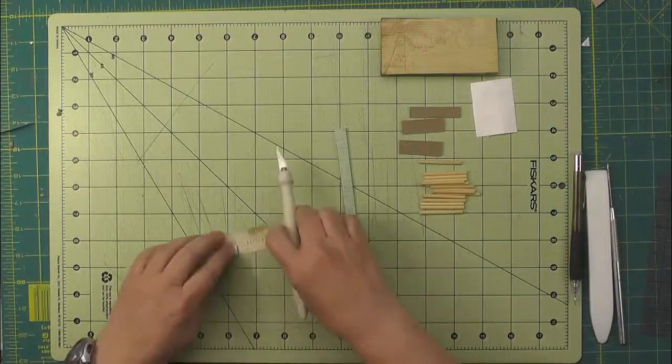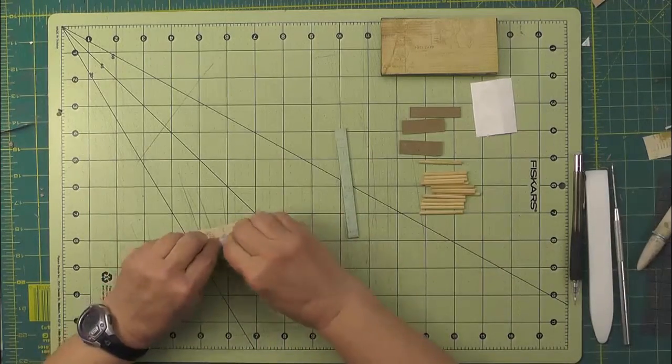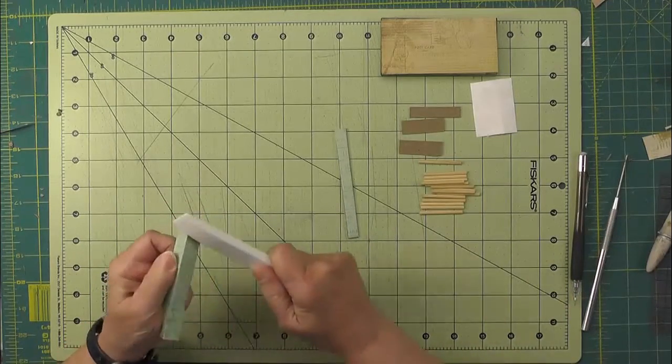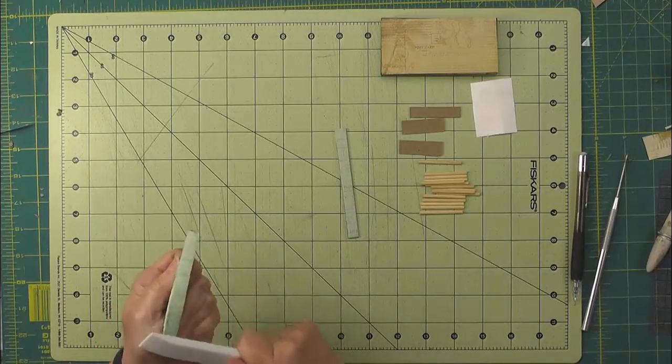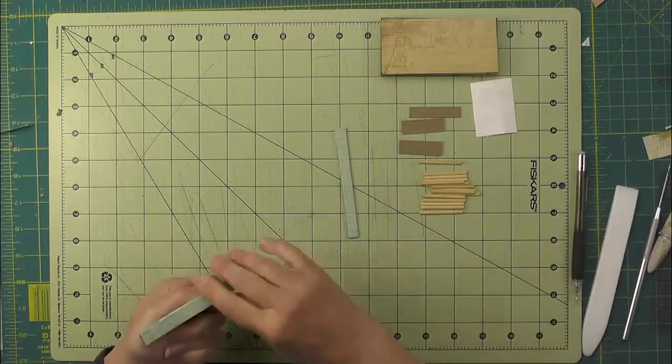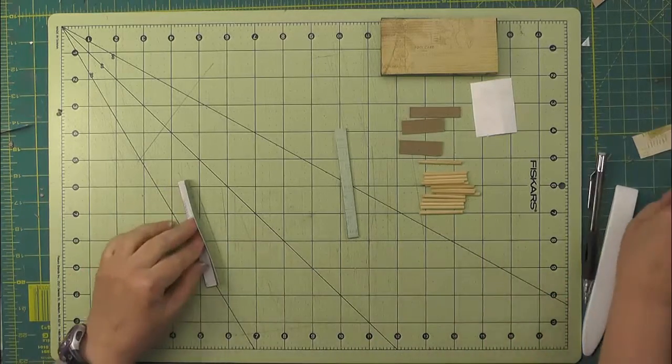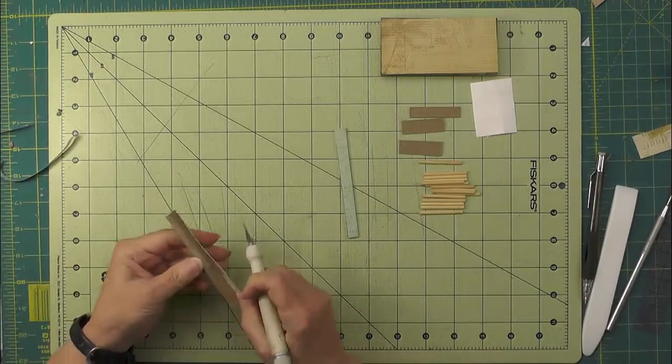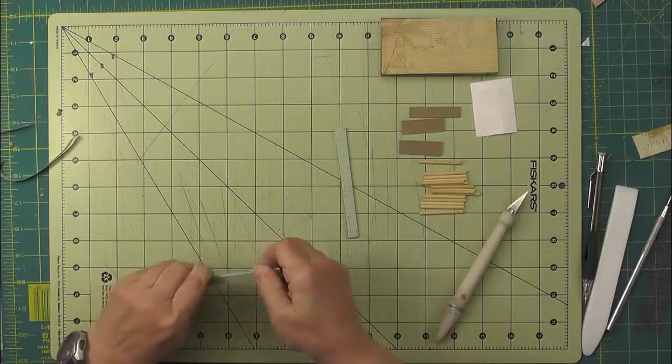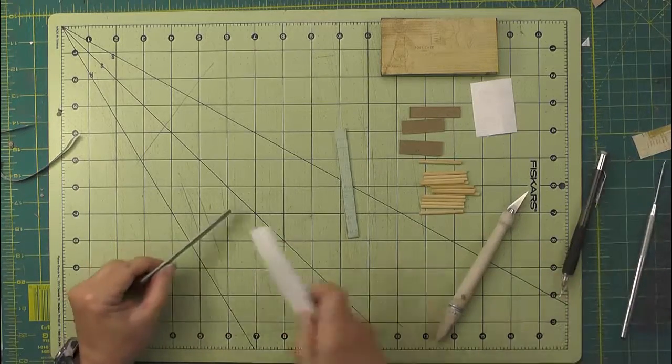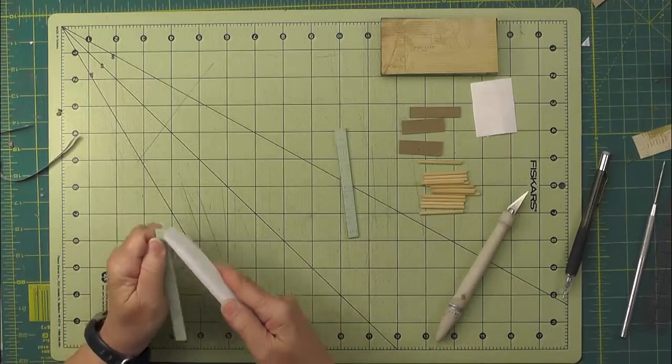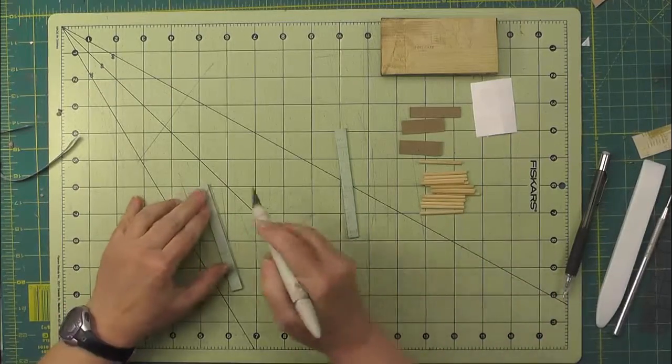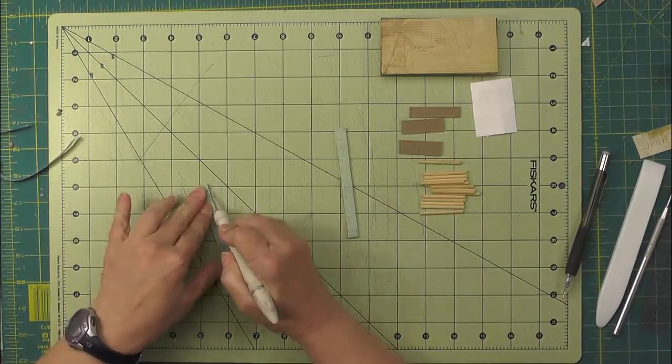So I'll trim that off here, and then just kind of form it and use your bone folder to get a nice tight wrap around there. And then we'll finish burnishing, and I'll trim any excess that there is off.